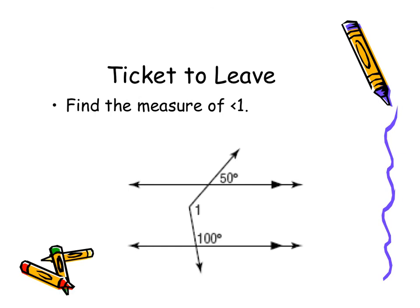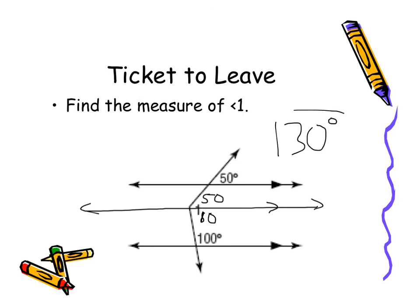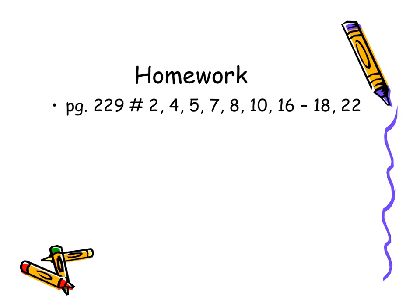Here's one more crook problem for extra practice. Draw the third parallel line. The 50° angle corresponds to 50°, and the same side interior angle supplementary to 100° gives 80°. So 50 + 80 = 130 degrees. Here's your homework — have fun with it, and make sure you check your answers online.